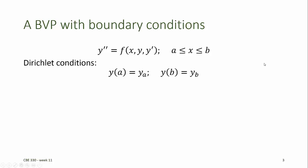If we know the value of Y at the extrema of the domain — Y at A and Y at B — then we have what are called Dirichlet boundary conditions. The Dirichlet boundary conditions for the solution are illustrated by the cartoon here, where Y at A and Y at B are known, and the problem is to find the values of Y between A and B.